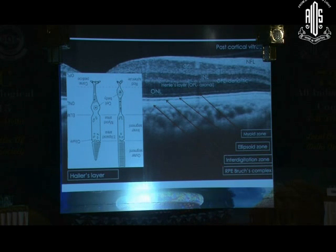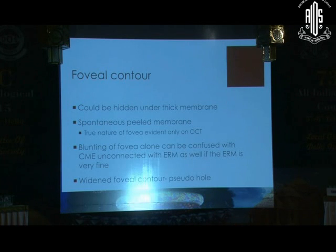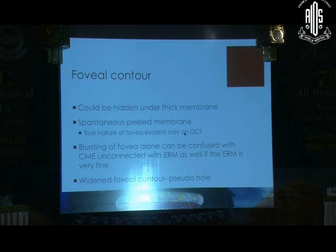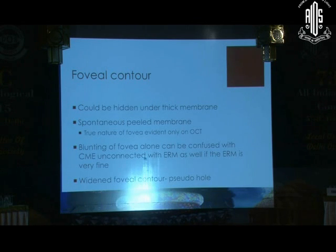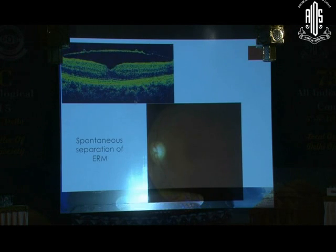What you require is adaptive optics OCT to detect those microfolds. The foveal contour can be hidden under a thick membrane, and sometimes good vision can be explained by the fact that under a relatively thick membrane the fovea is actually quite healthy. A spontaneously peeled membrane reveals the true nature of the fovea — evident only on OCT sometimes, as the opalescent membrane on top doesn't tell you what the fovea is like. A blunting of the fovea alone can be confused with cystoid macular edema, especially when the membrane is very fine. A widened foveal contour is what is sometimes labeled as a pseudo-hole. In a typical example of a relatively thick membrane, on clinical biomicroscopy you may not be exactly aware of the foveal contour, but the patient may actually have good vision because of a good foveal contour.